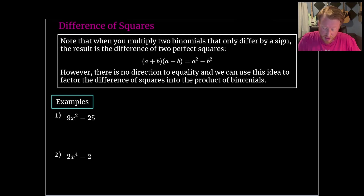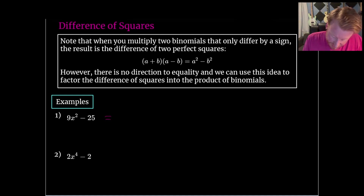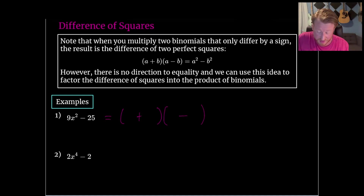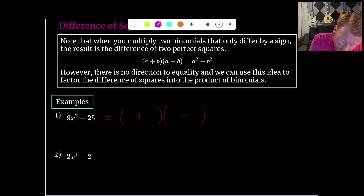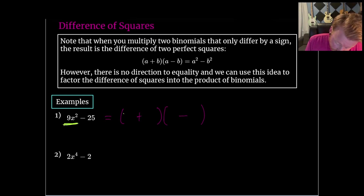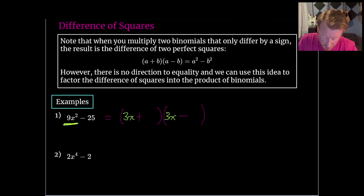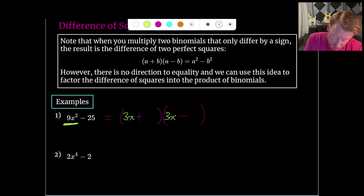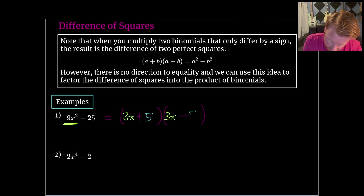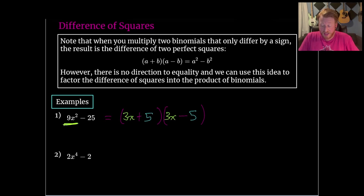We've got 9x² - 25. Nine x² is a perfect square, 25 is a perfect square, and they're being subtracted — this is a difference of perfect squares. I know there's going to be a plus in one binomial and a minus in the other. What do I need to square to get 9x²? That's 3x, which goes in the first spot for both. What do I need to square to get 25? That is 5. When you multiply back out, we'd get positive 15x and negative 15x, which cancel out — that's how this works.